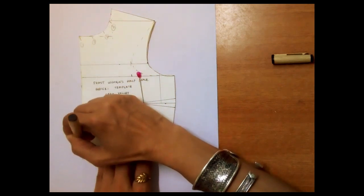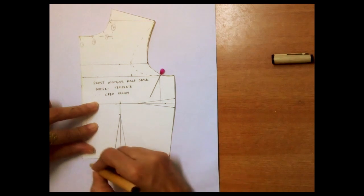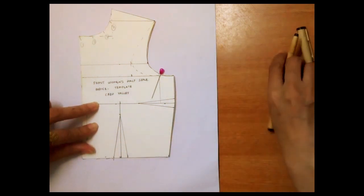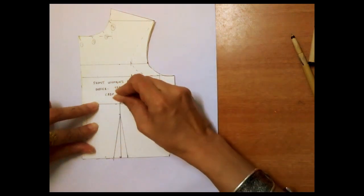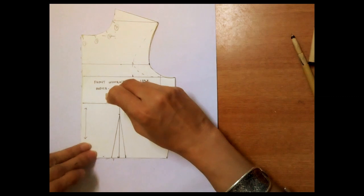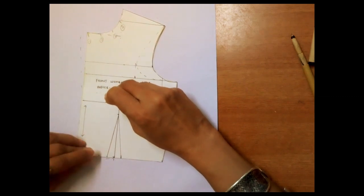I will start tracing the center front seam line from the corner of the neckline downward towards the waistline. I will trace until I meet the leg of the dart at the waistline. I will keep the pearl head pin at the bust point.